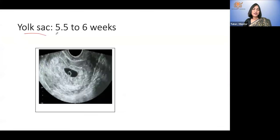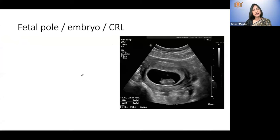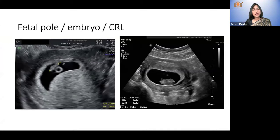Now, the yolk sac. See this beautiful picture — that is the endometrium with a nice intense choriodecidual reaction around it. There is a proper white circle with black fluid inside — this is the yolk sac, which you see before six weeks. Then you see the embryo.